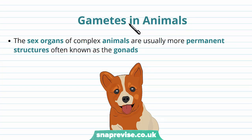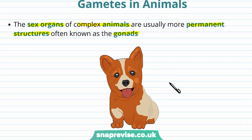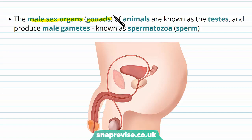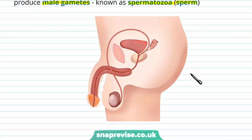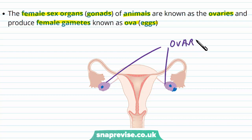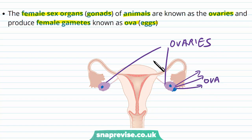Gametes in animals have a different structure to those found in plants. The sex organs of complex animals are usually more permanent structures known as the gonads, present from birth and staying throughout life. The male sex organs — the gonads — are known as the testes, and they produce the male gametes. The male gamete cells are known as spermatozoa, or more commonly as sperm. The female sex organs, also called the gonads of animals, are known as the ovaries — just like in plants — and they produce female gametes known as the ova, or more commonly the eggs. Here we have a diagram where these structures are the ovaries, one on either side, and they produce the ova — the individual female gametes — which can be fertilised by the sperm cells, or spermatozoa.